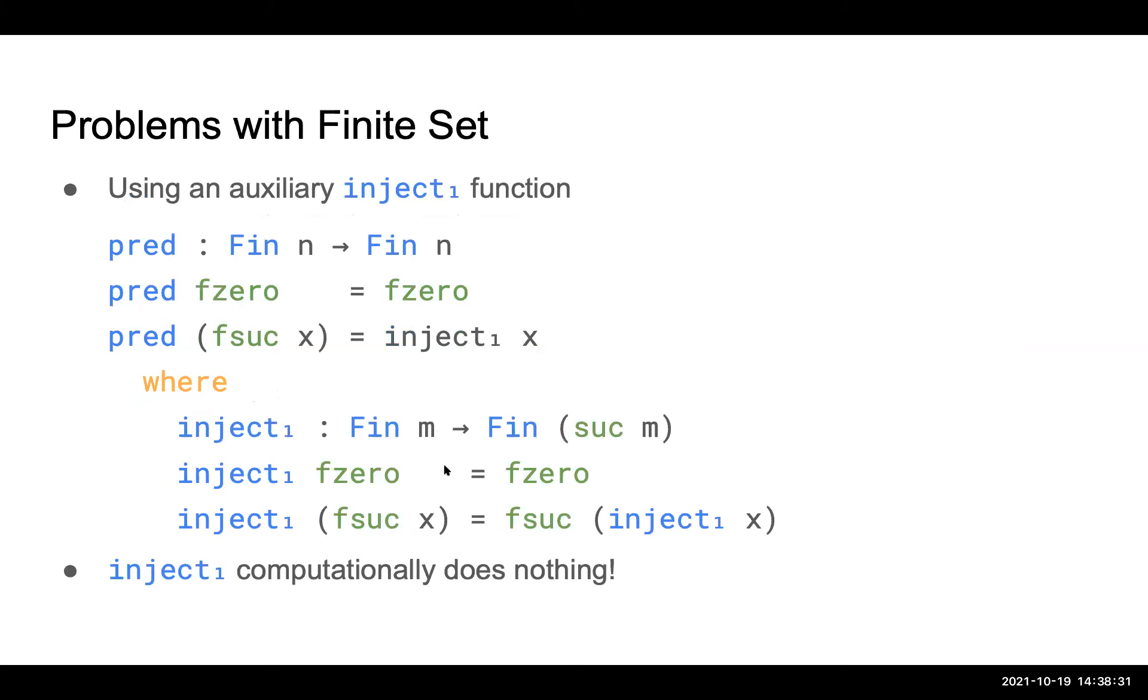So to fix that, we need to use an auxiliary function called inject1, which is a proof that for all Fin n, it's also a Fin succ n. Then using this inject1 function, we can finally finish our predecessor function. So here we see the problem is not only we need to write an extra function to finish predecessor. And also, if you look at the definition of inject1, it computationally does nothing. It keeps the underlying Fin n structure intact, but only changes its type. So imagine having to call this kind of function in production code, that will be very unacceptable. So can we do better? Can we improve on this?